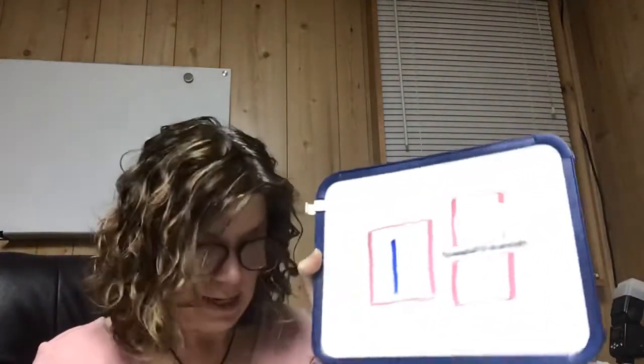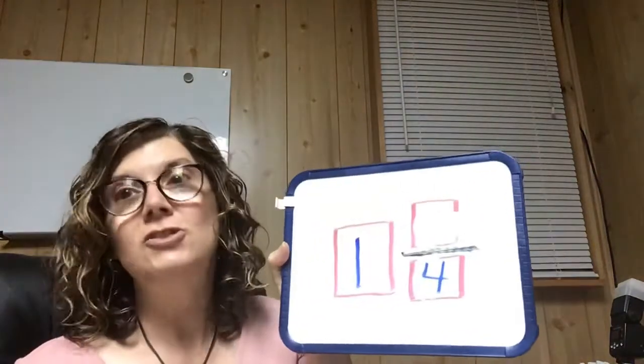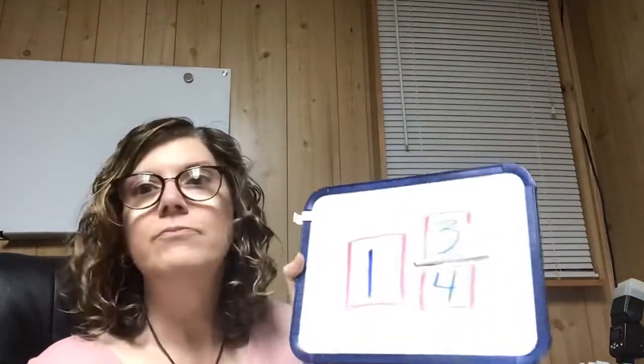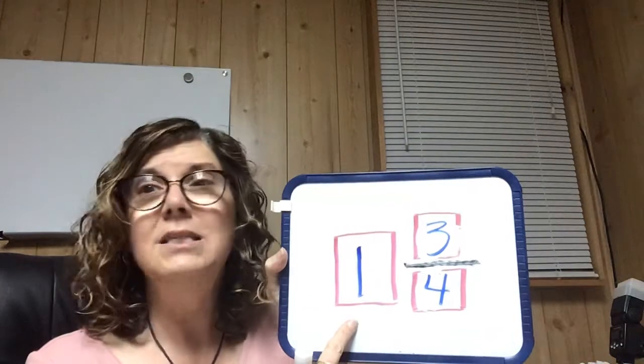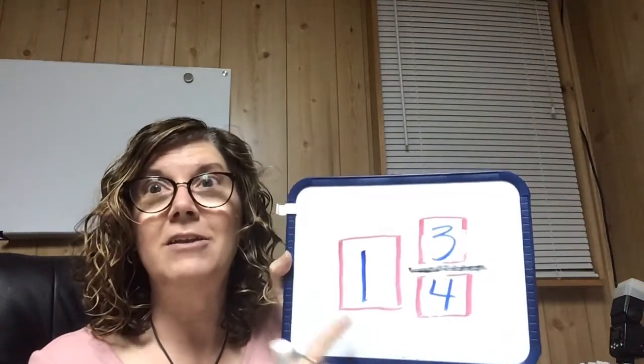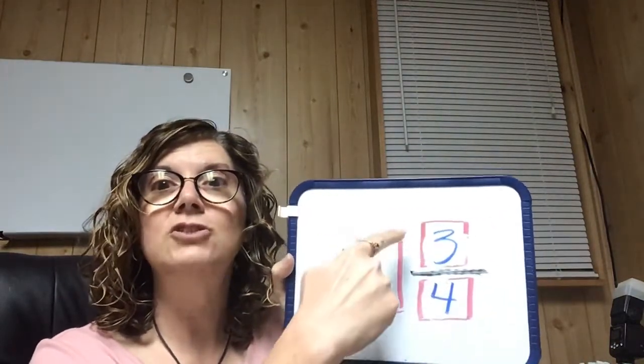Write one in the first orange box, then two-thirds in the fraction boxes. The next problem has yellow circles divided into four sections. The first circle has all four sections colored — that's one whole circle. The second circle also has four sections, so four is your denominator, and three sections are colored yellow, so the numerator is three. You have one and three-fourths.